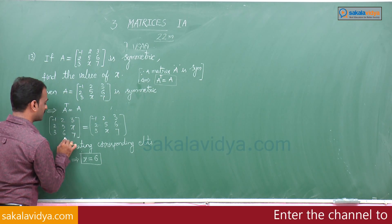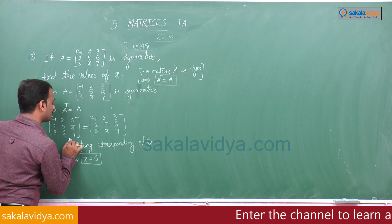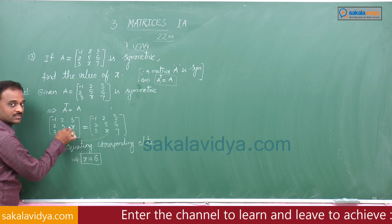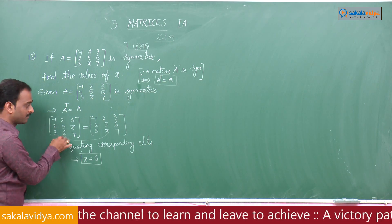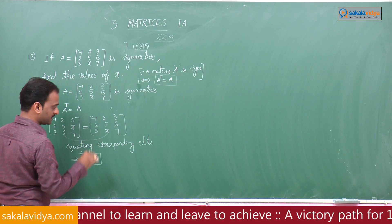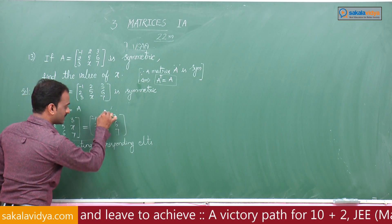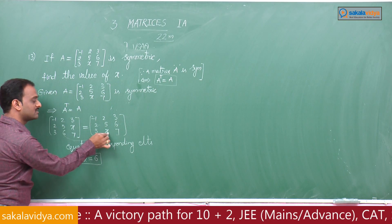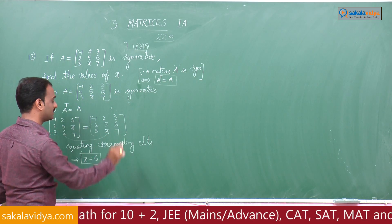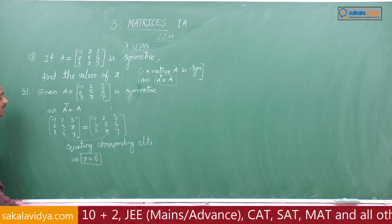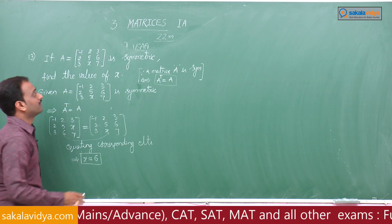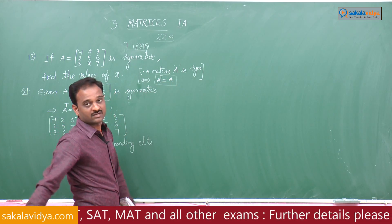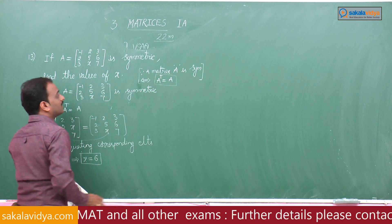Here also, if you observe, 6 equals x. The third row, second column element is 6 on the LHS, and the third row, second column element on the RHS is x. Therefore, 6 equals x, or x equals 6. The symmetric definition is A transpose equals A.